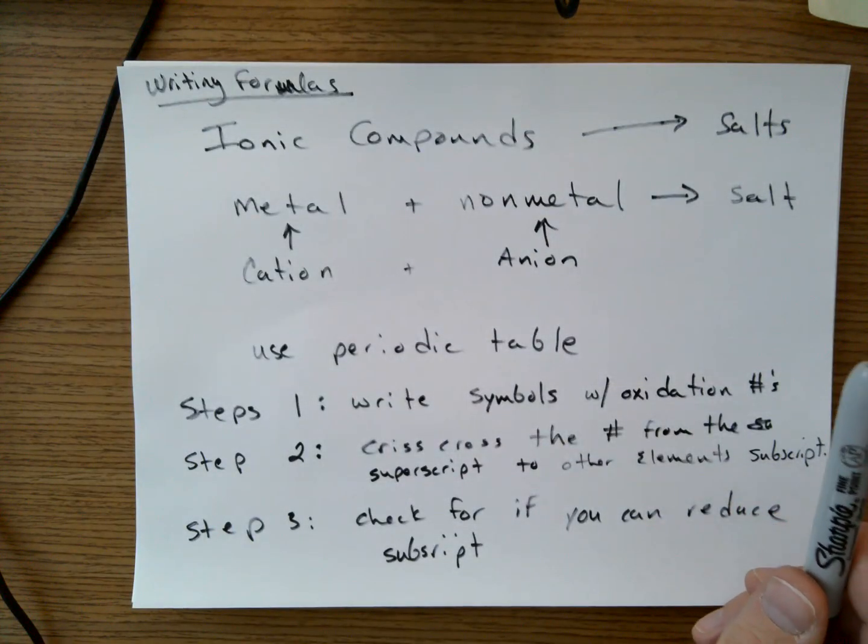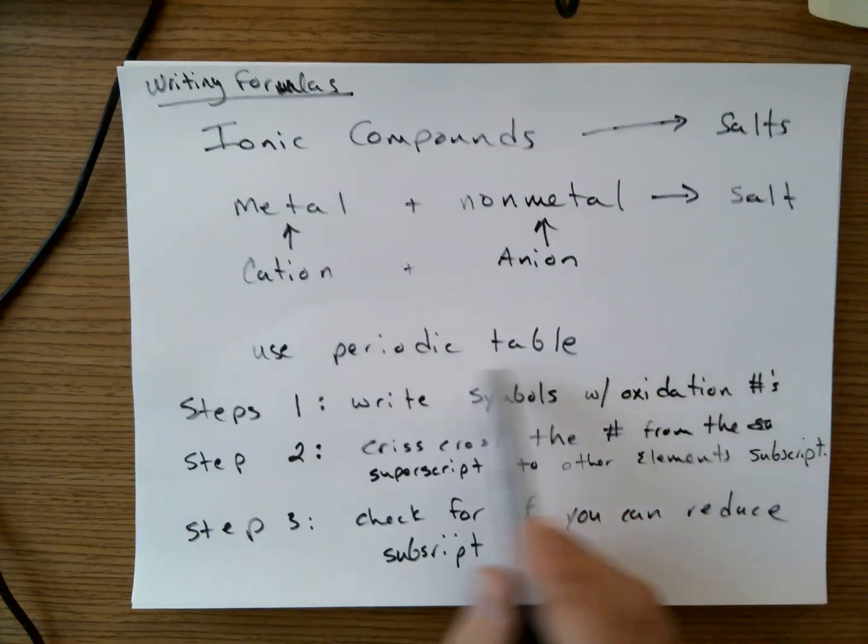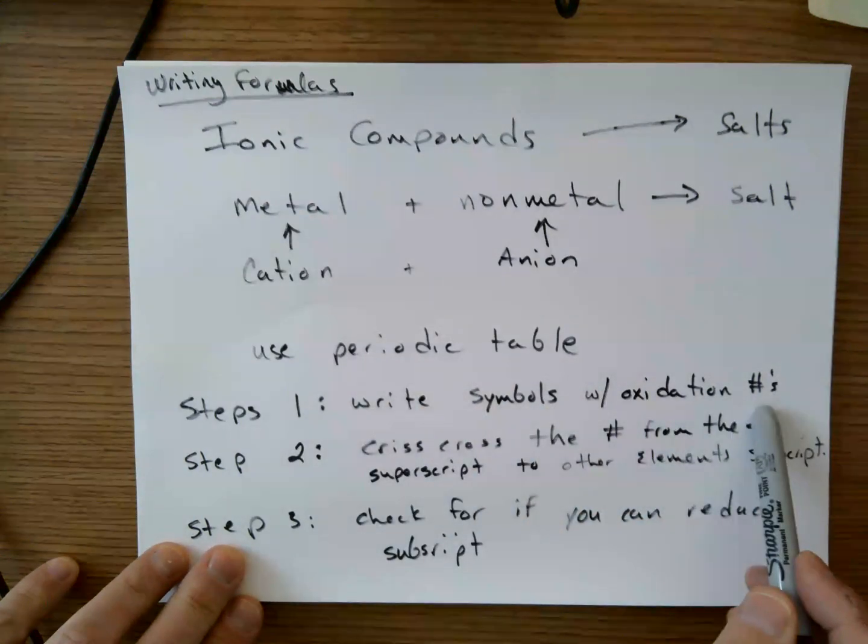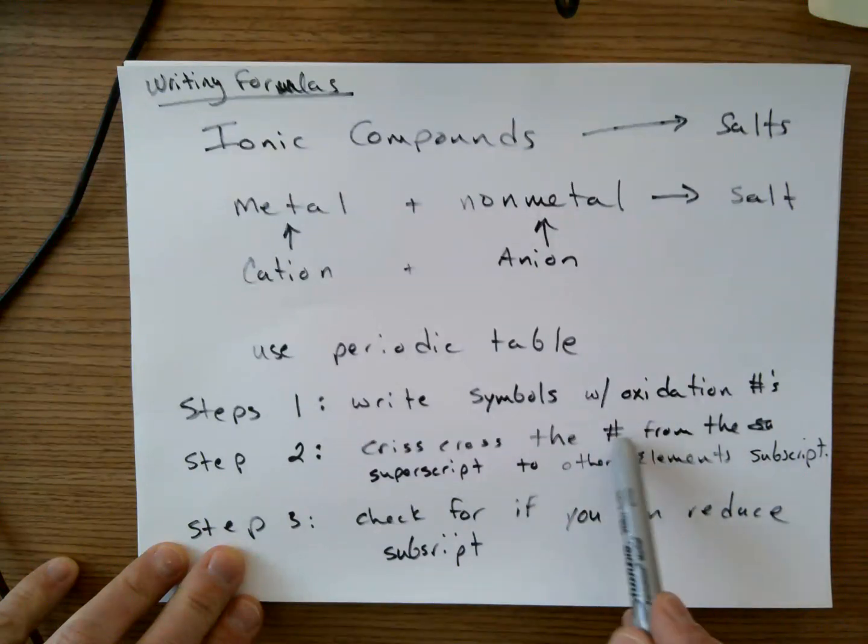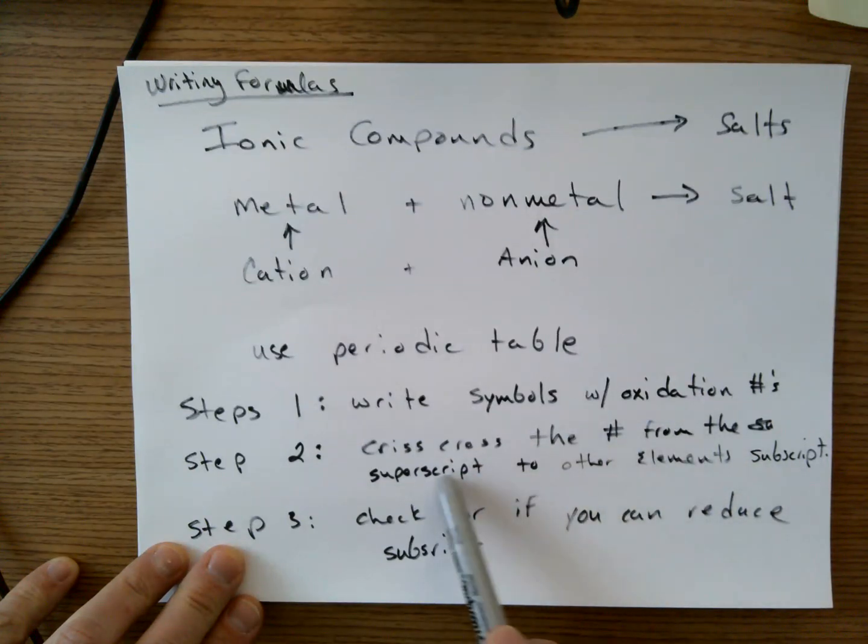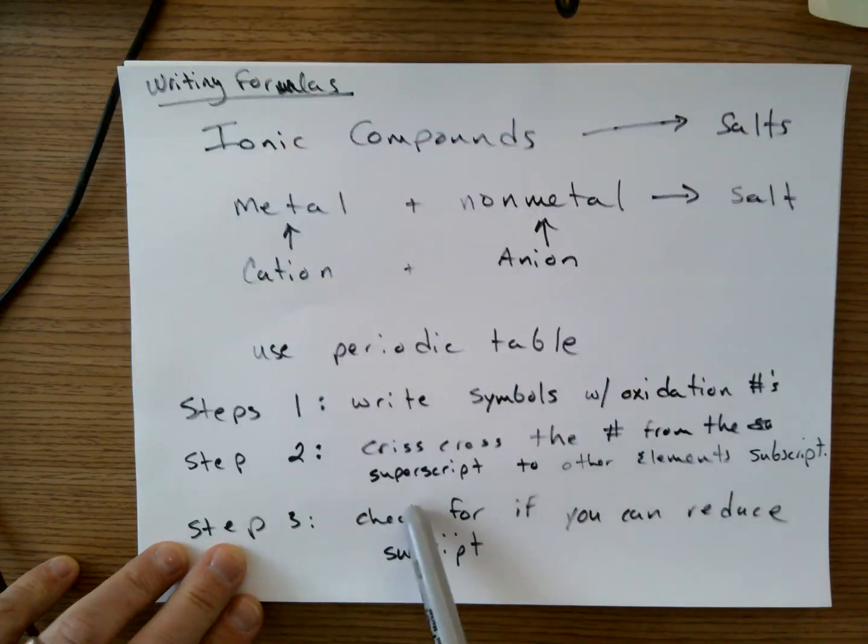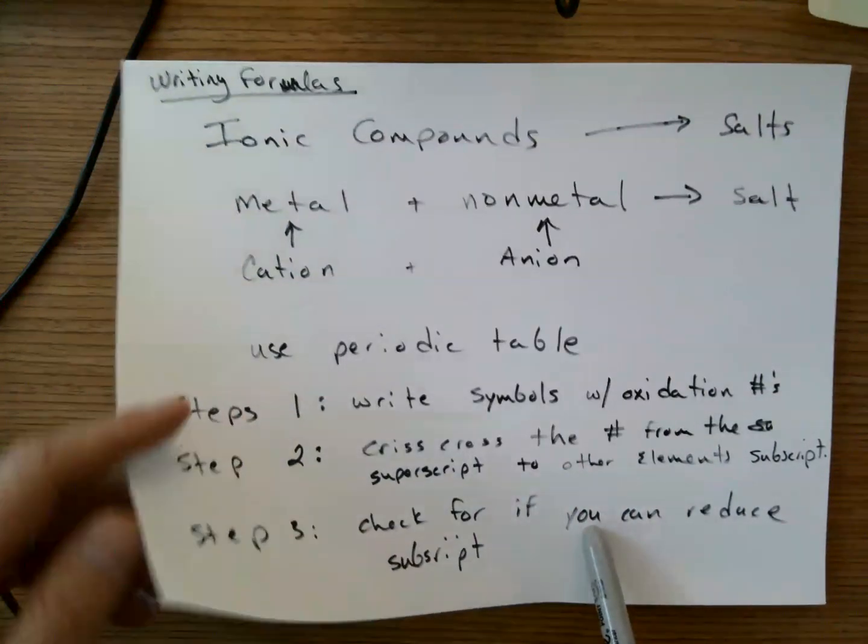So the steps are: write the symbols with the oxidation states. You're going to crisscross just the number from the oxidation states, not the sign. And you're going to take that from the superscript to the other element subscript. And you always want to check if you can reduce the subscripts. We want our formulas to be in the most reduced form.